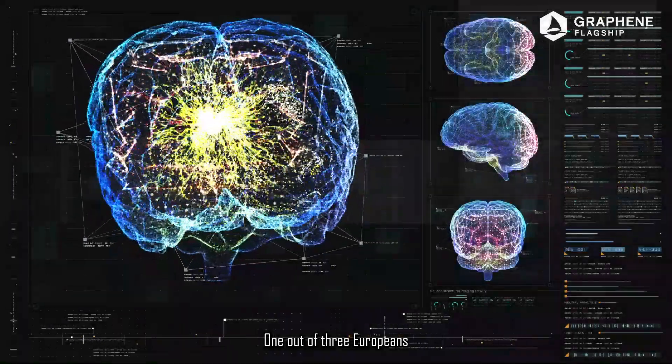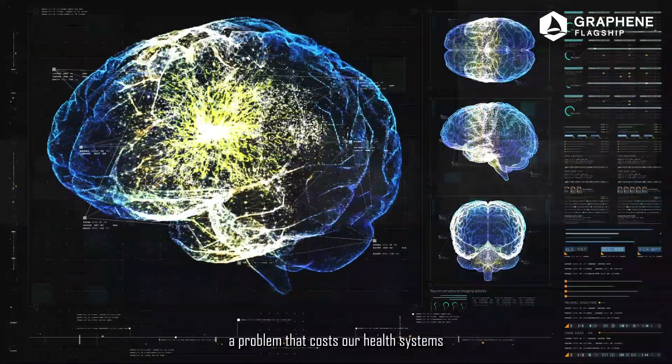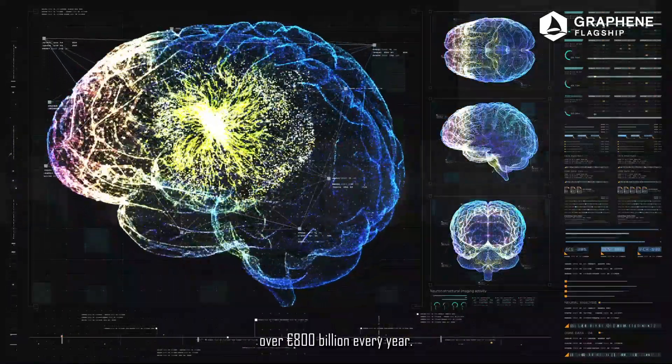One out of three Europeans is affected by brain disorders, a problem that costs our health systems over 800 billion euros every year.